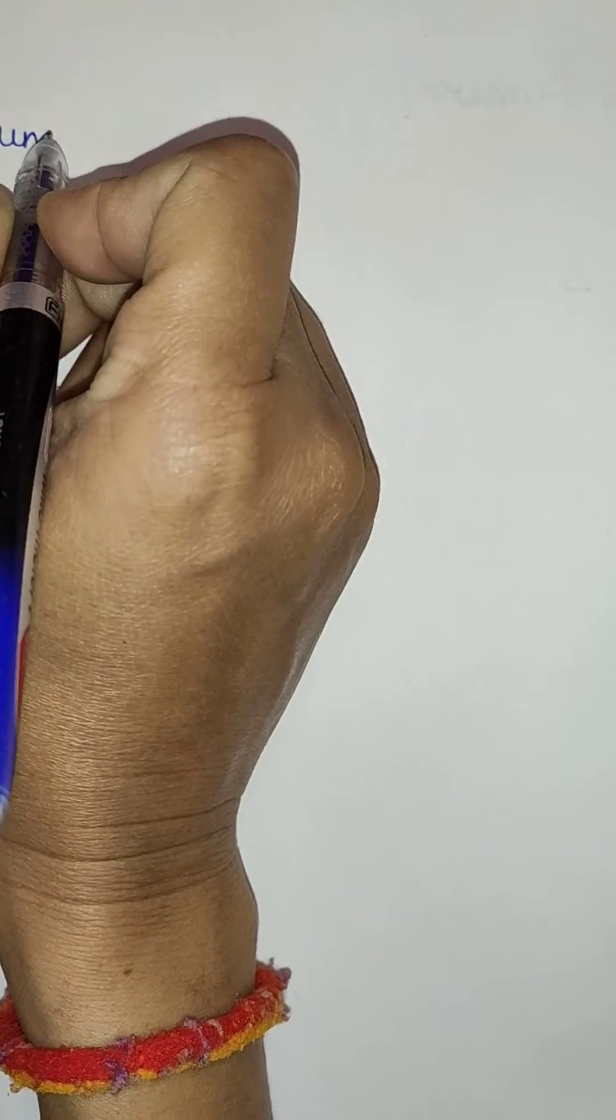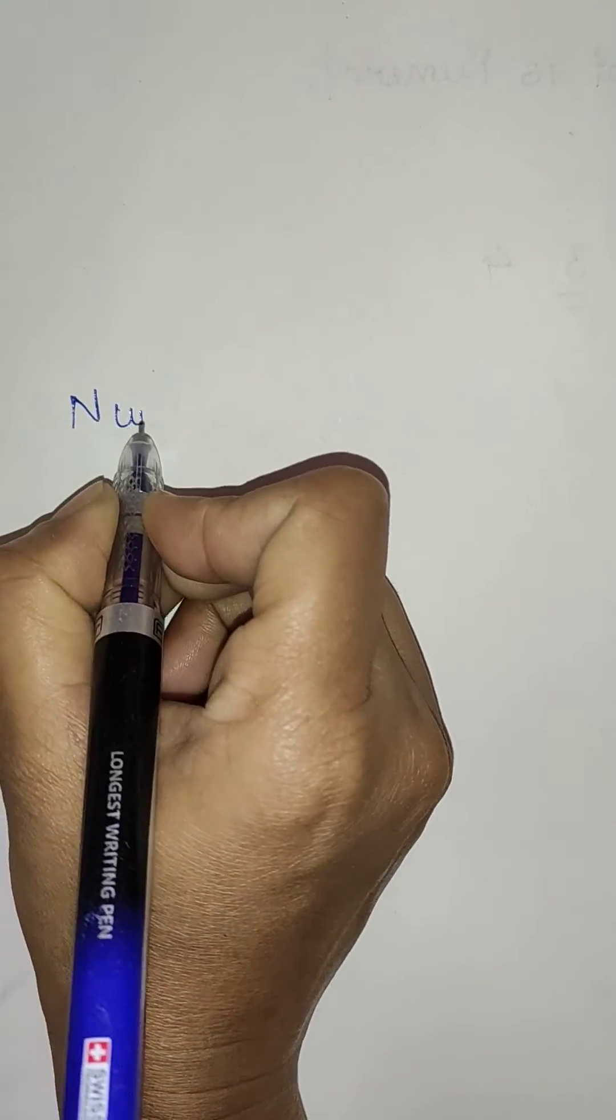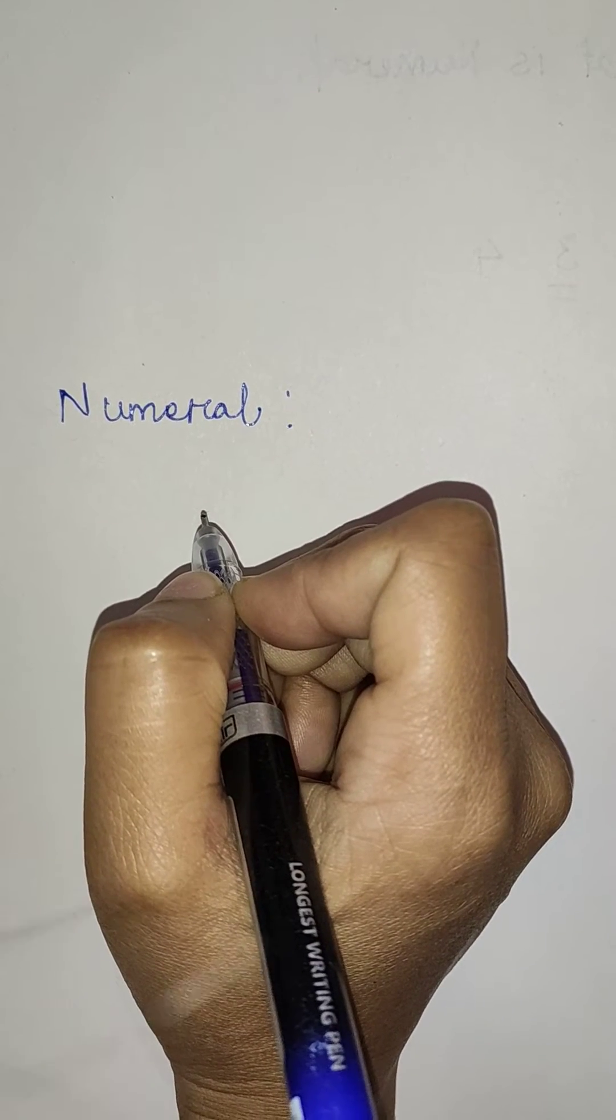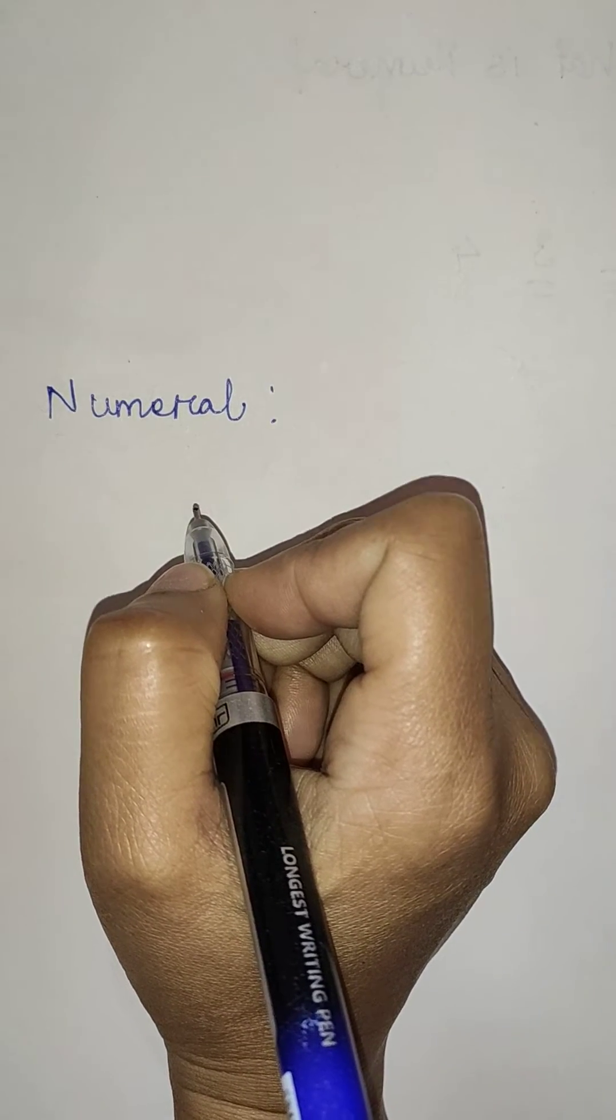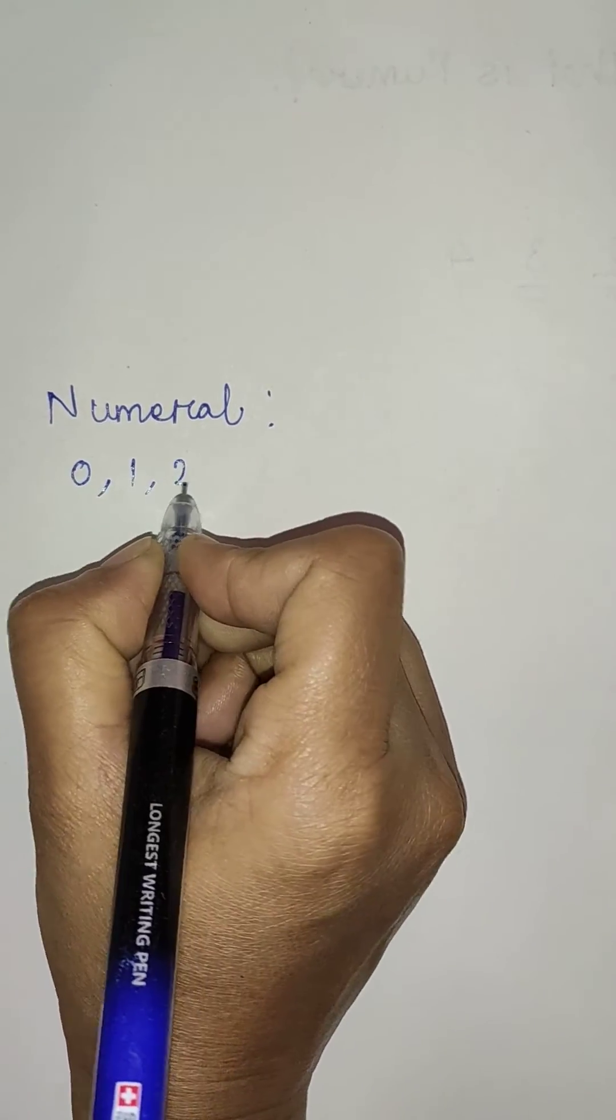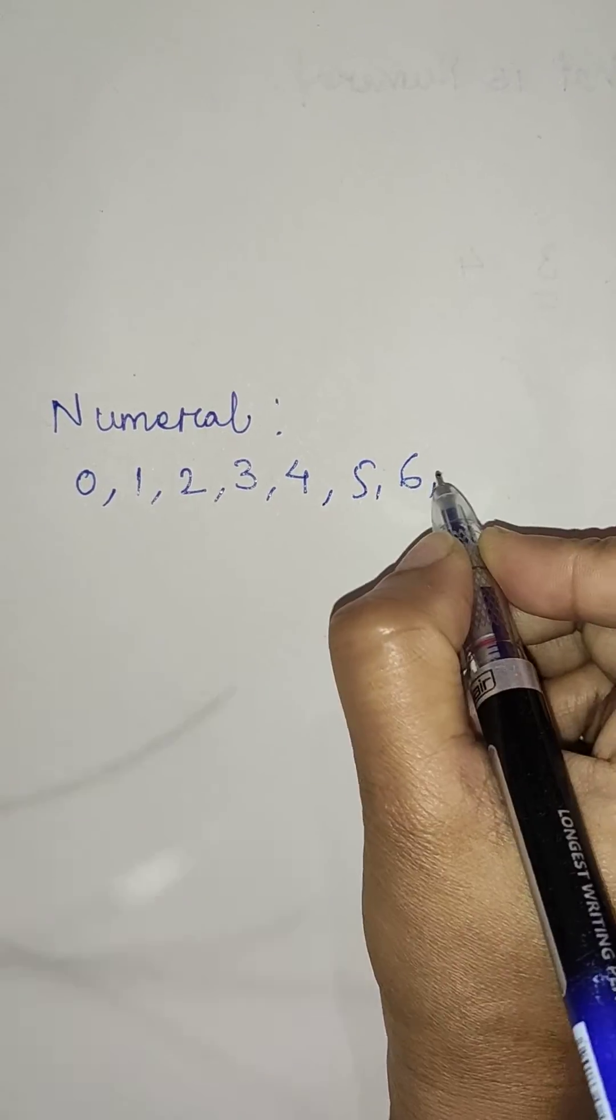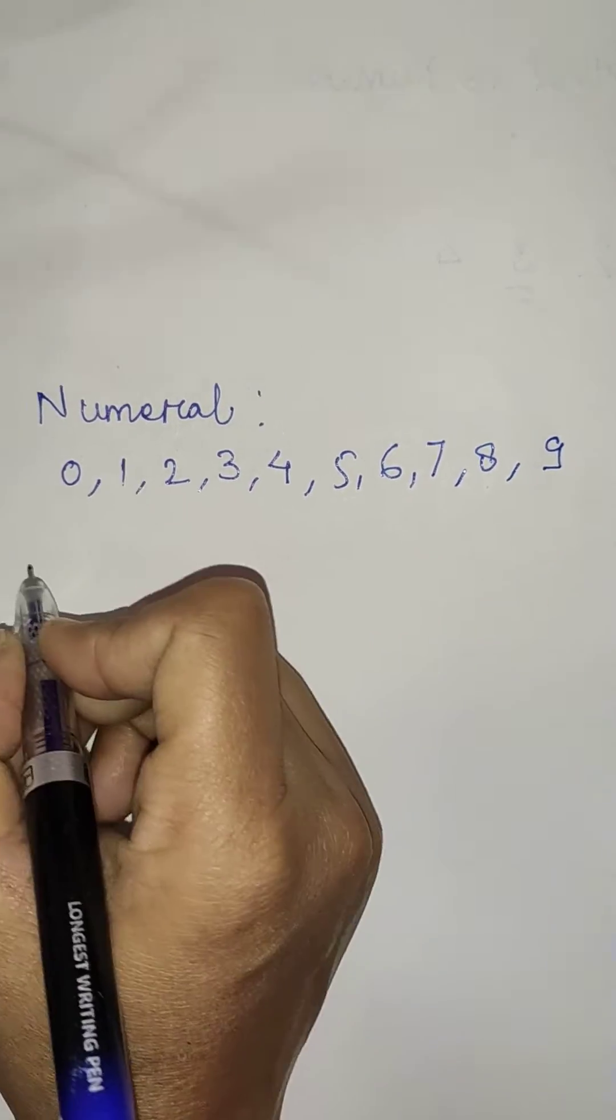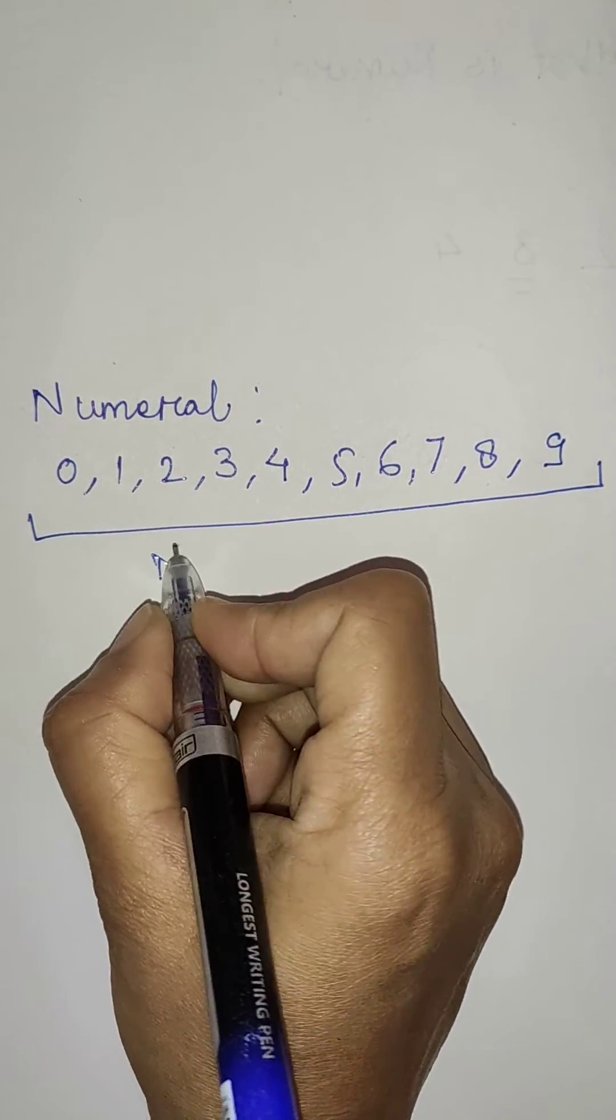Numeral. When we write a number in figure form, it is called numeral. We know the numbers like 0, 1, 2, 3, 4, 5, 6, 7, 8, 9. These are the figure form of number.